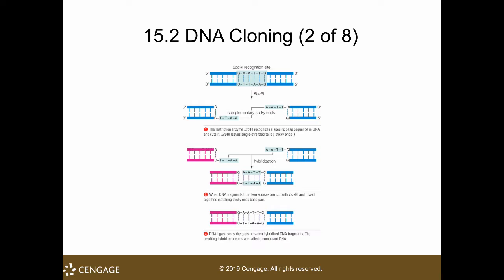ECO-R1 cuts between G and A on the upper strand, forming overhangs. These are unpaired bases, and they will look for their complementary pairs — they become sticky to their complementary pairs. Then you have another gene, or DNA from another organism, cut with the same ECO-R1. Since it's cut with the same ECO-R1, the sticky ends have complementary bases, so they will stick together.